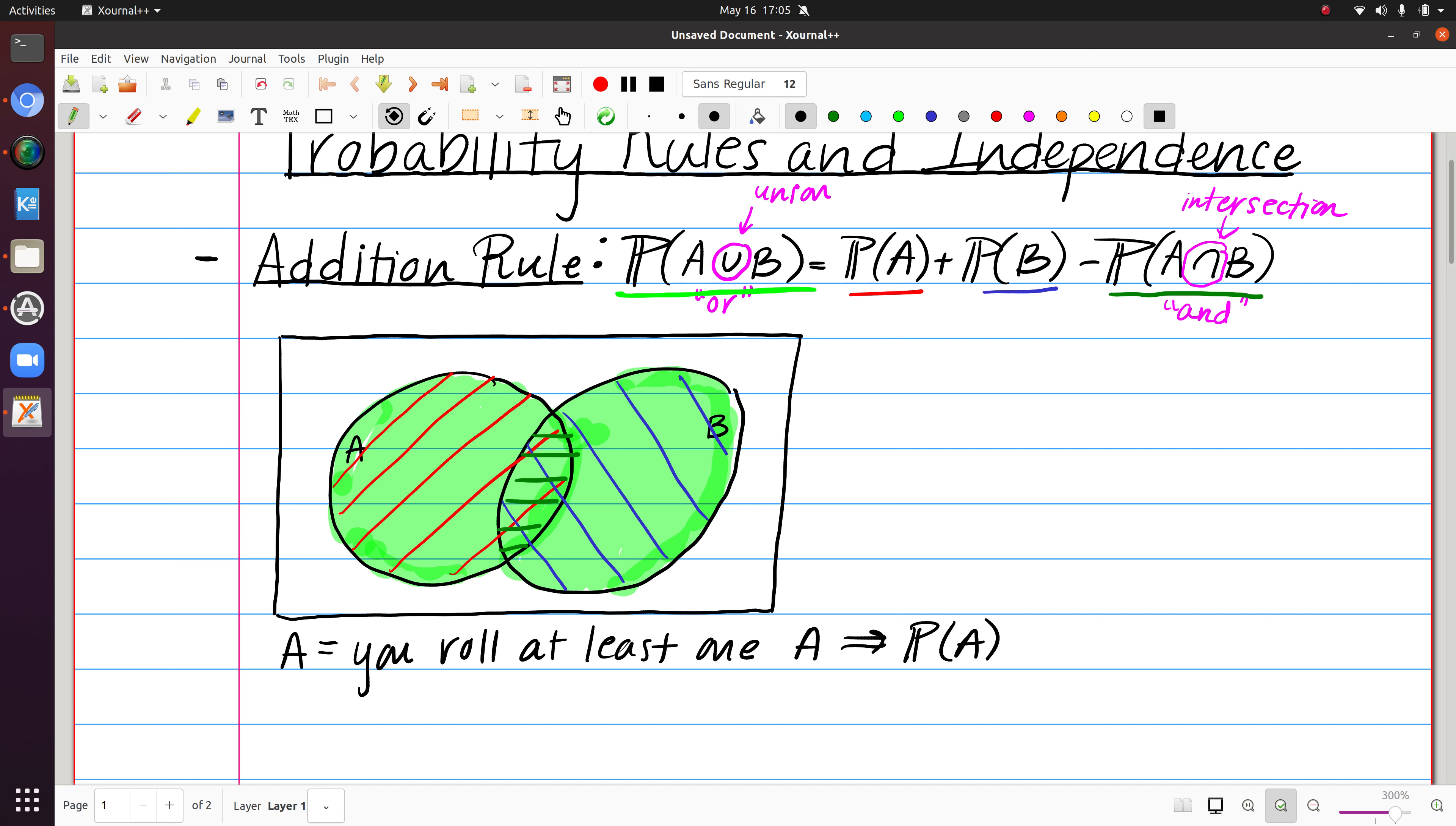So if I let A equal that you roll at least one A, then we can think about the outcomes that correspond to that. That would be A, A, A, B, A, C, A, D, B, A, C, A, and D, A. So the probability of that would be 7 out of 16.